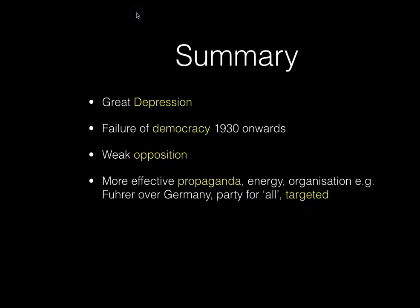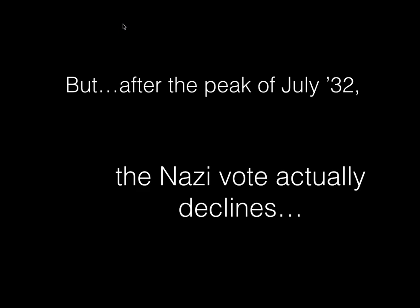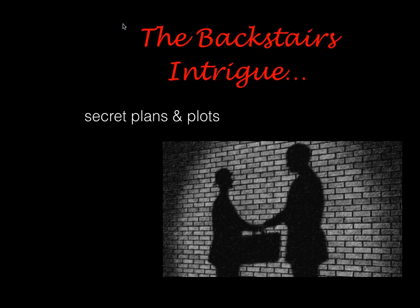Last lesson we looked at a summary of various factors why the Nazi party gained electoral support in the period 1930-32. But it's important to remember that after that peak of 37%, 230 seats in July, the Nazi vote actually started to decline. What helped Hitler to be appointed Chancellor in 1933 by Hindenburg was something called the Backstairs Intrigue by the historian Alan Bullock.